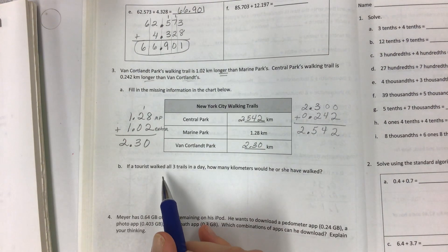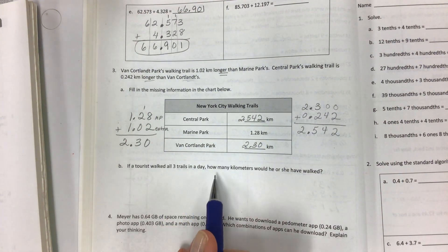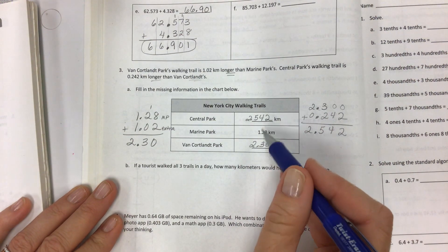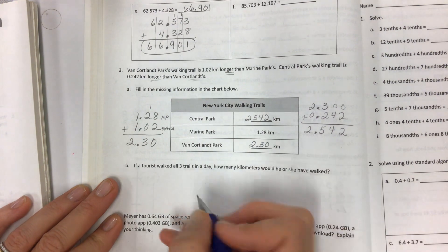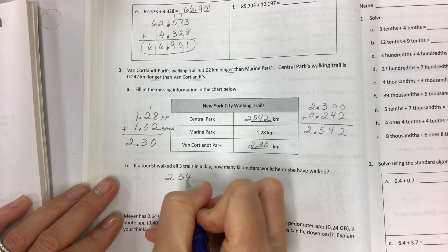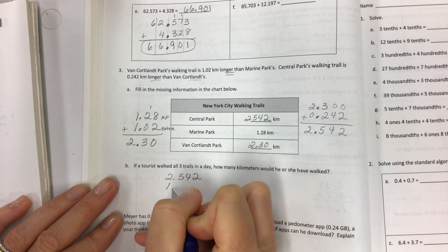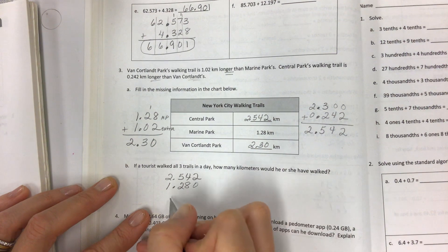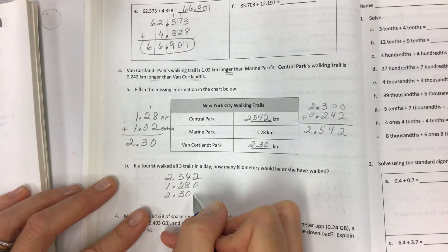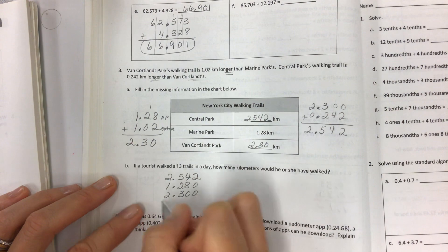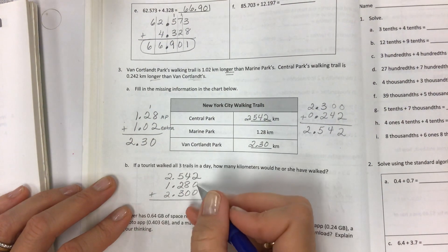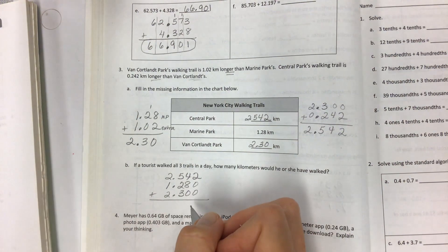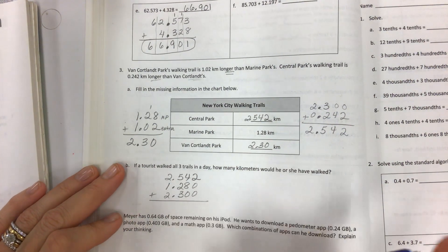Now if a tourist walked all three trails in a day, how many kilometers would he or she have walked? What do you think you're going to do? Well, you can put all these together and have your total distance. Don't forget to line them up. If I have 1.28 and I don't have anything there, that's okay, put on a zero. 2.30—if I don't have anything there, put on a zero. Do you have to put it there? No, but if it makes you feel happy you can. Then you're just going to add them up.